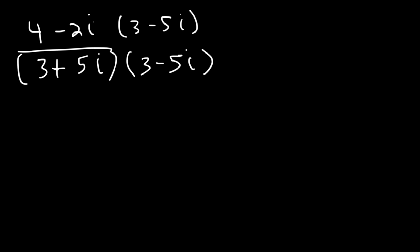Let's try one more example. 4 minus 2i divided by 3 plus 5i. Simplify the expression. So we're going to have to multiply the top and the bottom by the conjugate of the denominator. So on top, we need to FOIL.